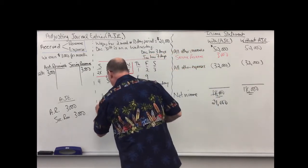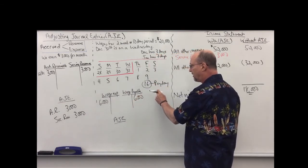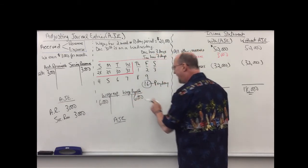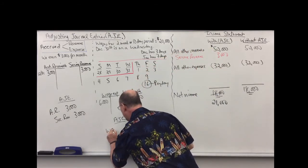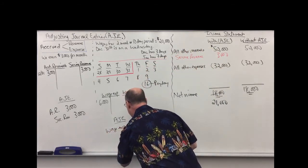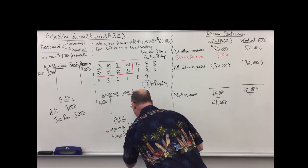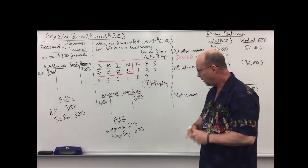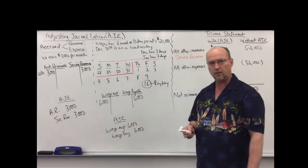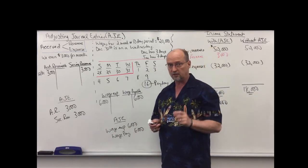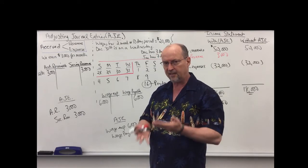I'm going to debit wage expense. Since I'm not paying them until the 16th, I accrue a payable of $6,000. That's my adjusting journal entry: debit wage expense $6,000, credit wage payable $6,000. Wage expense goes on the income statement; wage payable is a liability that goes on the balance sheet. All adjusting entries have one balance sheet account and one income statement account, and they never have the cash account.